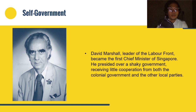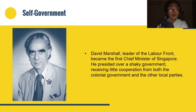After the legislative councils were founded, David Marshall, the leader of the Labour Front, became the first Chief Minister of Singapore. He presided over a shaky government, receiving little cooperation from both the colonial government and other local parties. Social unrest was on the rise. In April 1956, Marshall led a delegation to London to negotiate for complete self-government in the Merdeka Talks, but the talks failed when the British were reluctant to give up control over Singapore's internal security, concerned about communist influence given the predominantly Chinese population.